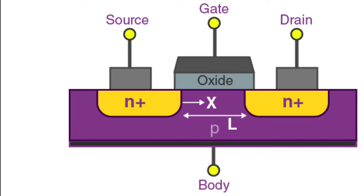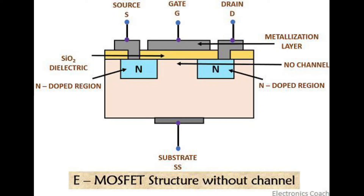MOSFET working principle: when voltage is applied to the gate, an electrical field is generated that changes the width of the channel regions where the electrons flow.